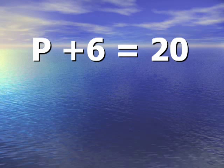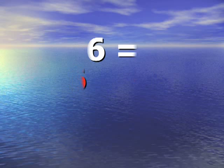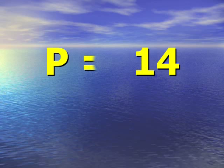Again, another example. Instead of subtracting this time, we're adding 6. p plus 6 is equal to 20. So now the opposite of adding 6 is subtracting 6. So I subtract 6 from both sides of the equal sign, and when this happens, I get my p-value is equal to 14.